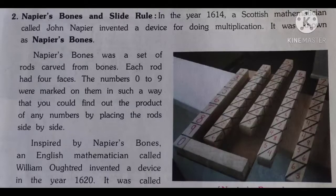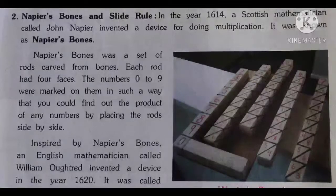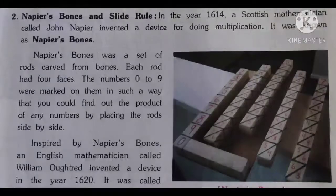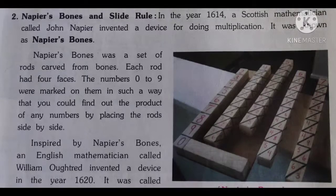In the year 1614, a Scottish mathematician called John Napier invented a device for doing multiplication. This device was called Napier's Bones.